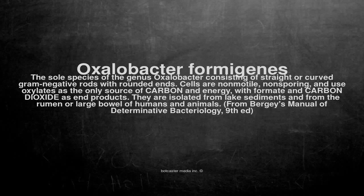Oxalobacter formigenes — the sole species of the genus Oxalobacter — consists of straight or curved gram-negative rods with rounded ends. Cells are non-motile, non-sporing, and use oxalates as the only source of carbon and energy, with formate and carbon dioxide as end products.